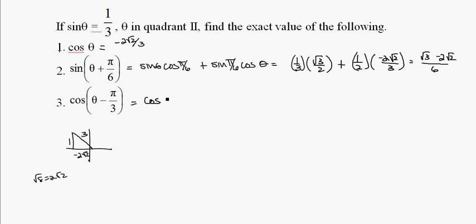Cosine of theta minus pi over three is cosine cosine plus sine sine. Cosine of theta in this case is negative two radical two over three, times the cosine of pi over three, which is a half.